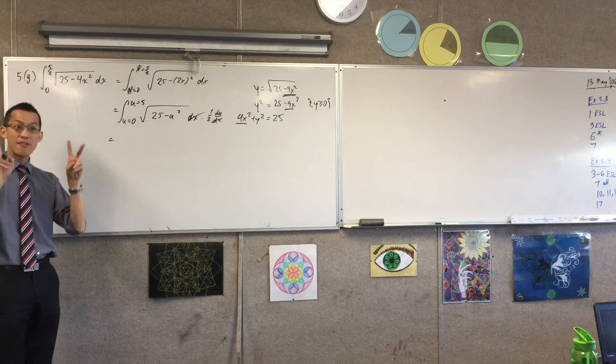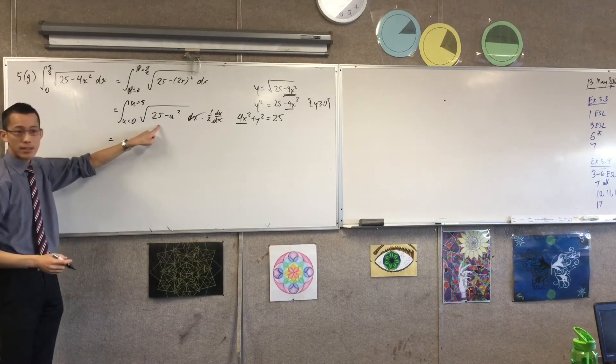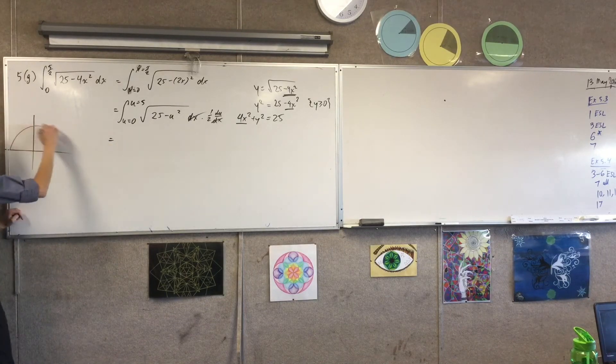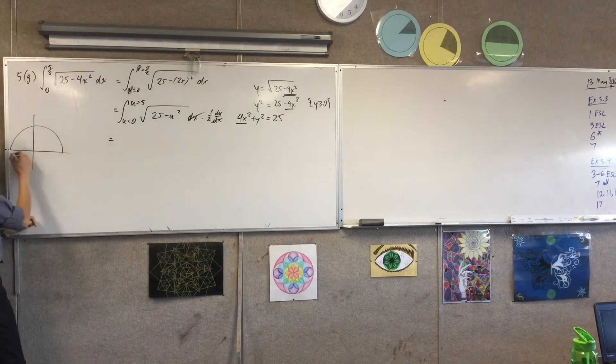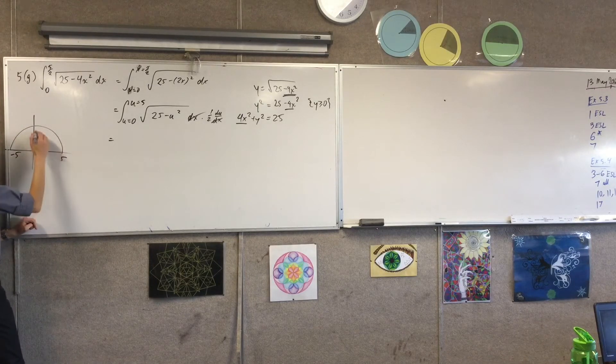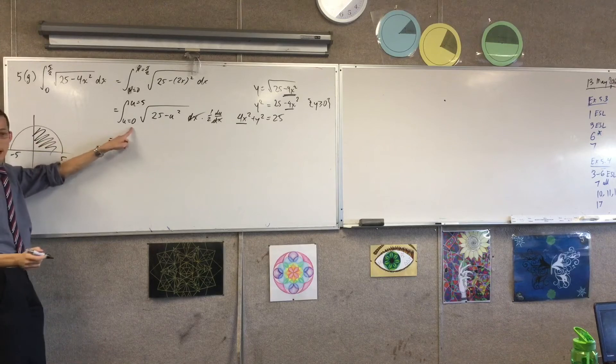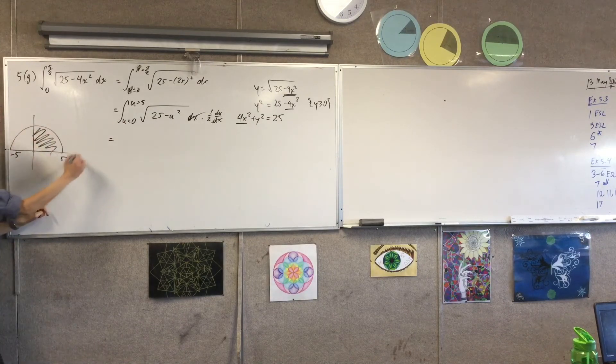Or rather than integrate, evaluate this integral. Because what is this guy, right? This is just a semicircle, but I'm only interested in, like this is negative 5 to 5. I'm only interested in this part, right? You see that?